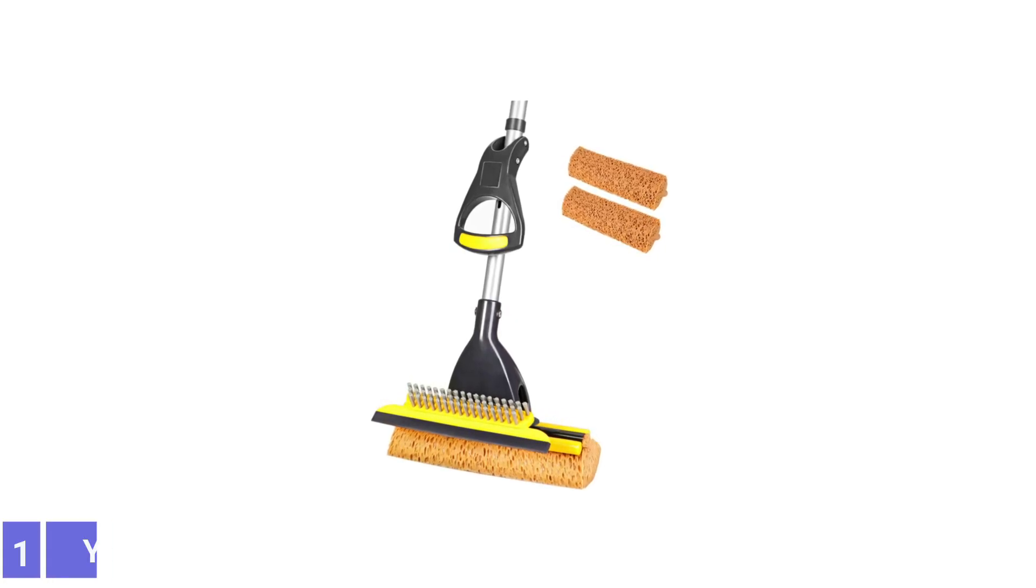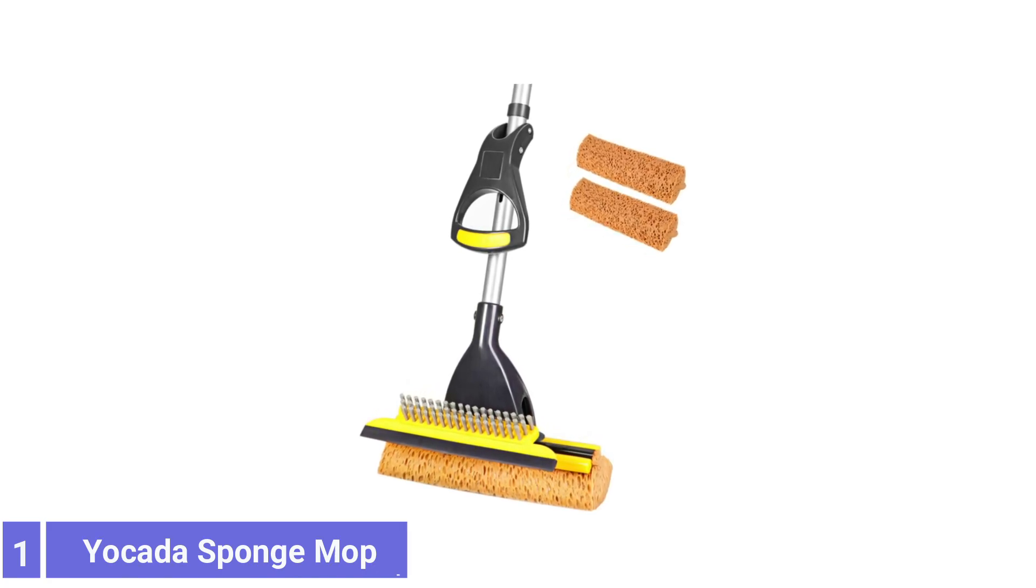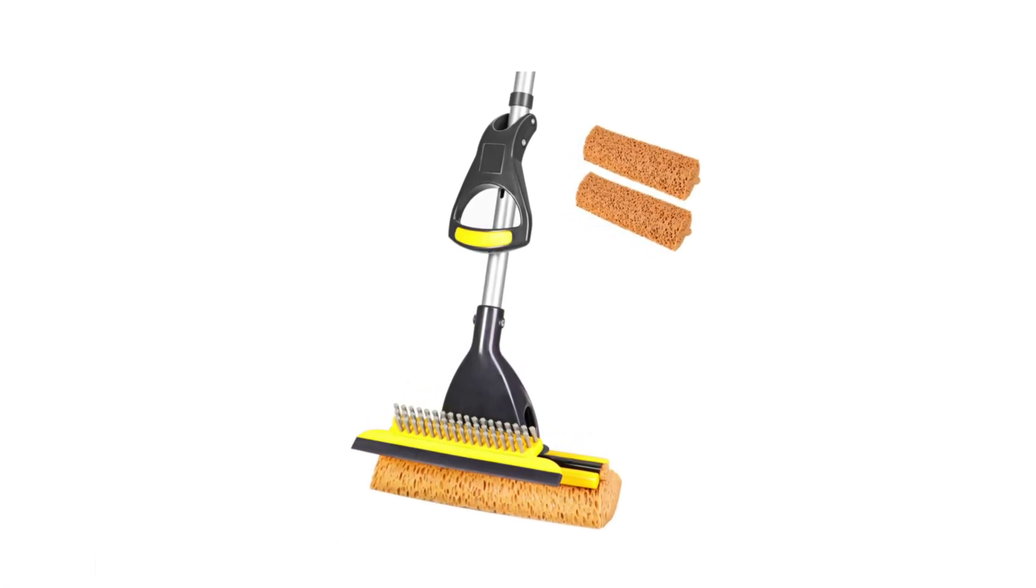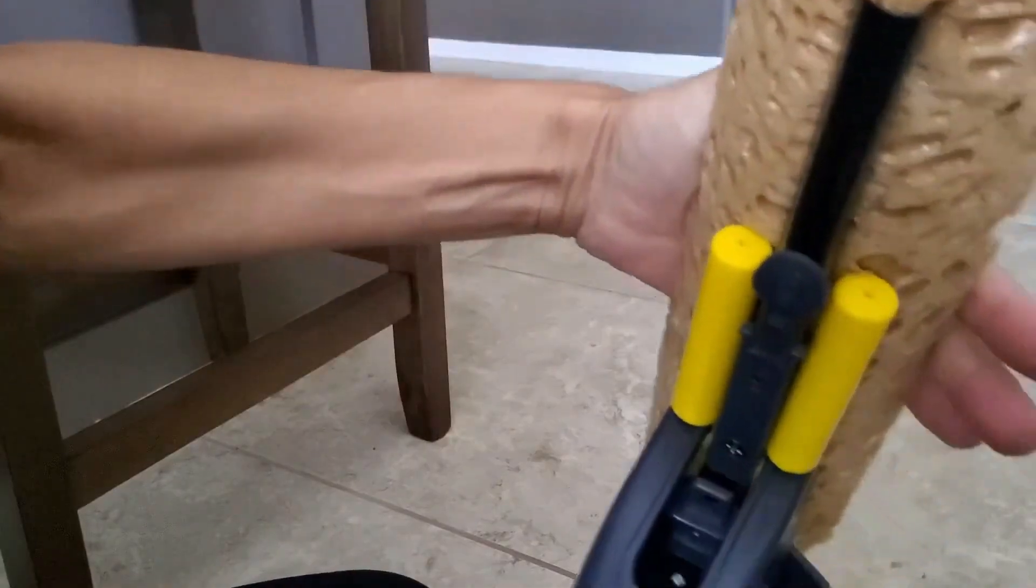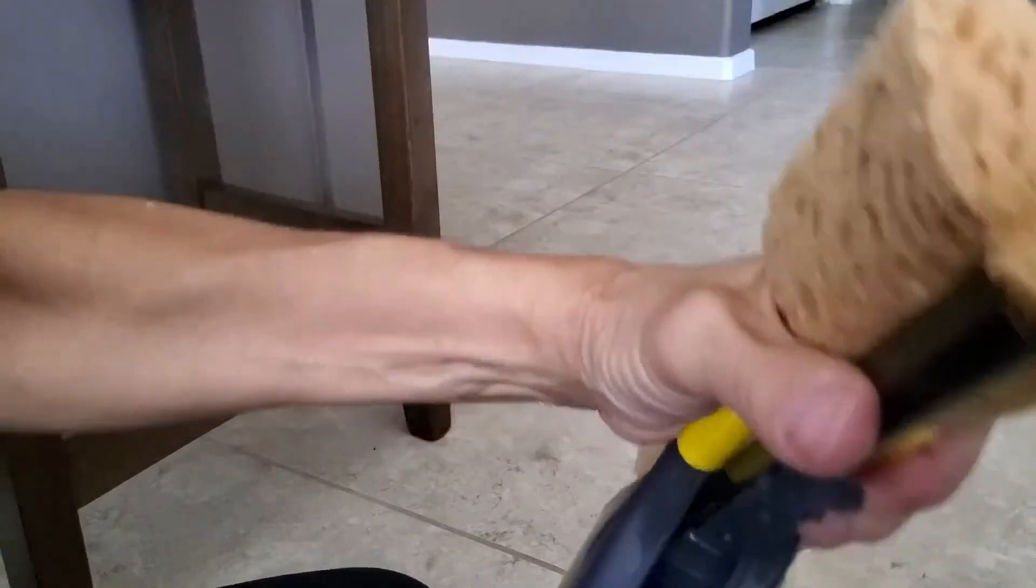Number 1. Yakata Sponge Mop. The Yakata Sponge Mop is suitable both for home and commercial use. Soft and absorbent, it can be used on various surfaces, from hardwood to laminate.